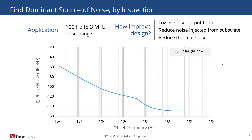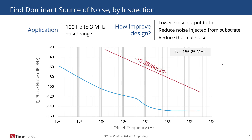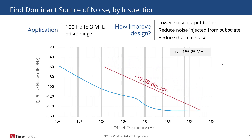Let's look at a different application using a different oscillator. In this case the application is concerned with an offset frequency range of 100 Hz to 3 MHz. We draw the line, lower it until it intersects the curve, and identify the far-out offset frequency region to be the dominant source of phase jitter. To improve this design, we can improve the noise in the output buffer, for example.